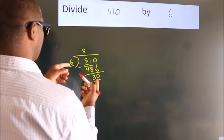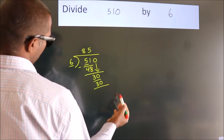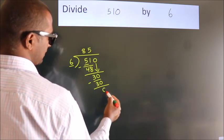In the 6 table, 6 times 5 is 30. Now we subtract. We get 0.